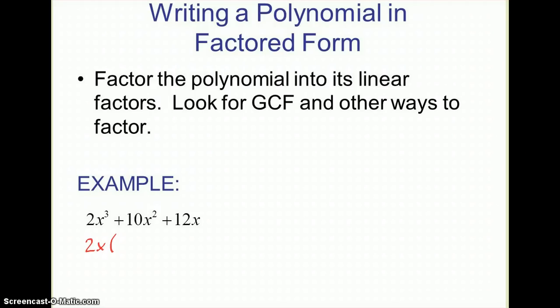When I do that, that's going to leave me with simply one set of parentheses for now. And in that parentheses, 2x times x squared would give me 2x cubed. 2x times 5x would give me 10x, and 2x times 6 is going to give me 12x. So I start with my greatest common factor and one parentheses. Now I look at this one parentheses that I have here, and I decide if that could be factored any further. If not, I would just stop here.